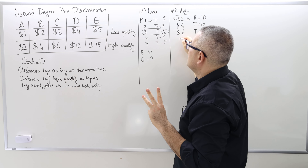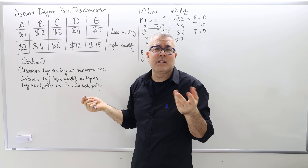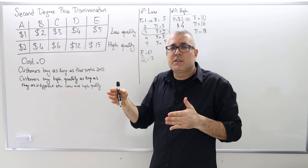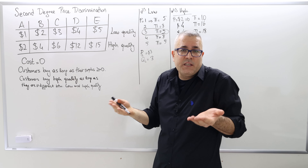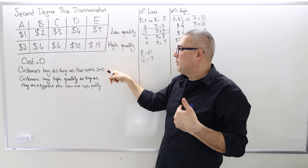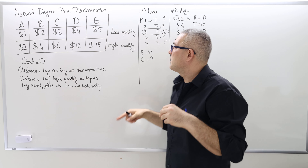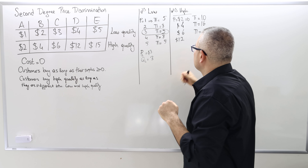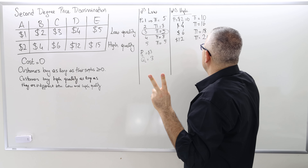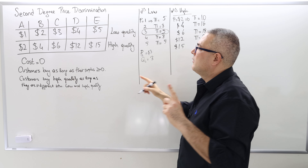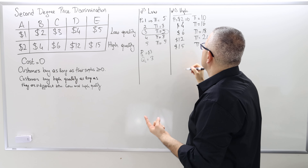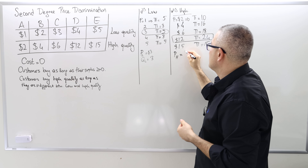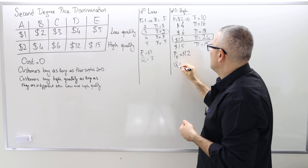If the price is $12, D and E will still buy because their surplus is non-negative. Profit is $24. If the price is $15, only one person buys and profit is $15. So the profit-maximizing price for high quality only is $12, with a quantity of two units sold.